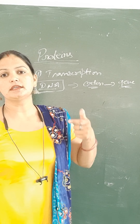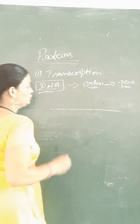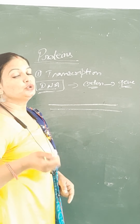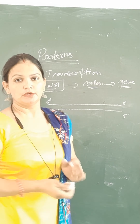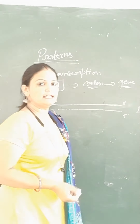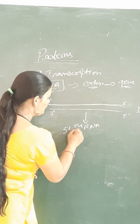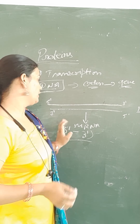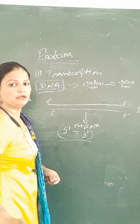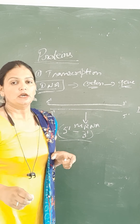Jo protein synthesis ke liye jo information hai usko carry karti hai. Toh first of all, jaise aap DNA ka strand le lo — DNA ka double strand hota hai. Double stranded DNA mein ek jo strand hota hai woh five prime to three prime hoga, doosra aapka three prime to five prime hoga. Toh jo messenger RNA hai, DNA se pehle aapki banegi messenger RNA. Messenger RNA ki formation honi hai toh jo messenger RNA hai, that is formed in the five prime to three prime direction. Jo aapka three prime to five prime end hoga DNA ka, woh as a template strand work out karega.